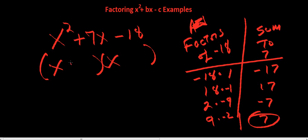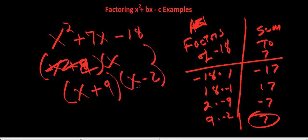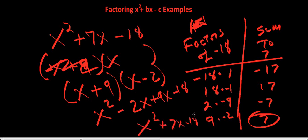You got x plus 9 times x minus 2. When you pull it out, you get x squared minus 2x plus 9x minus 18, and that gives us x squared plus 7x minus 18.